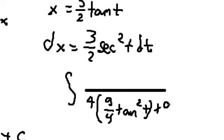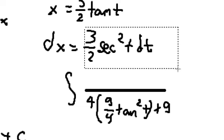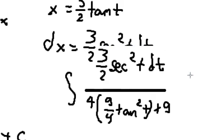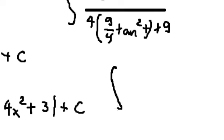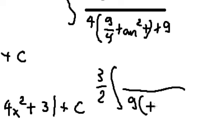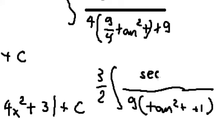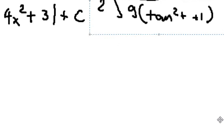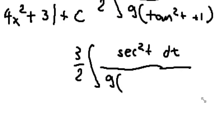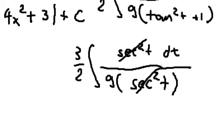And we have number 9. We change ds for this expression. So we simplify. We put 3 over 2 in here and got about 9 times tan squared(t) plus 1. This gives us secant squared of t dt. We change this for secant squared of t. We simplify and have number 3 over 9. So we got about 1 over 6 times the integral of t.